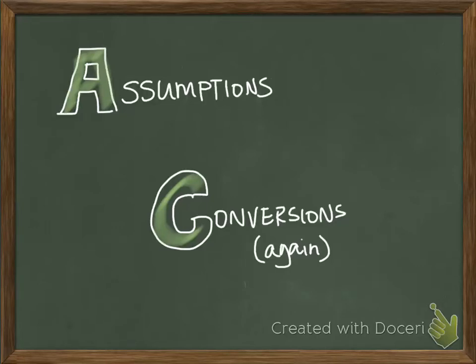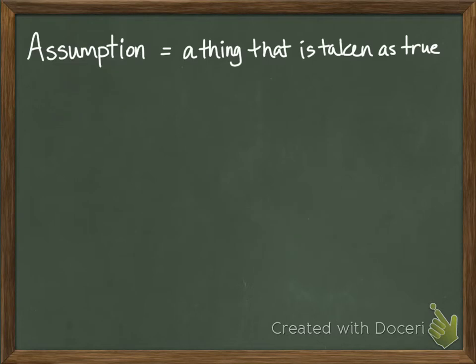In this lesson we're talking about assumptions and conversions. An assumption in general is a thing that's taken as true—the dictionary calls it a thing that's accepted as true or is certain to happen without proof. In our case, an assumption is something that we're going to take as true for the purposes of performing calculations.